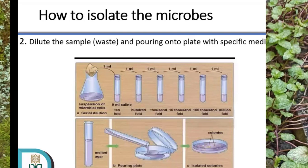Jadi kalau targetnya protease, saya menggunakan media spesifiknya adalah milk agar. Kemudian untuk lipase, bisa digunakan rhodamine B olive oil agar, atau tributyrin agar. Kenapa harus menggunakan media spesifik? Karena harapannya yang bisa tumbuh dalam media itu hanya mikroba yang menjadi target saya. Jadi kalau saya pakai milk agar, yang tumbuh hanya bakteri-bakteri penghasil protease. Kalau saya pakai tributyrin agar, berarti yang tumbuh adalah bakteri-bakteri penghasil lipase.